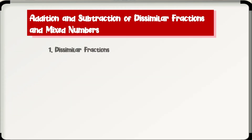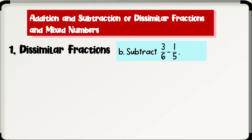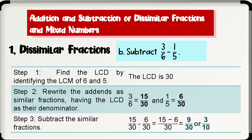Next example: subtract 3 over 6 minus 1 over 5. First, find the LCD by identifying the LCM of 6 and 5. Since the LCM of 6 and 5 is 30, we will use 30 as the LCD. Next, rewrite the addends as similar fractions: 3 over 6 is equivalent to 15 over 30, and 1 over 5 is equivalent to 6 over 30. Then subtract: 15 over 30 minus 6 over 30. Subtract the numerators — 15 minus 6 equals 9 — copy the denominator 30. Reducing to lowest term gives 3 over 10. Therefore, 3 over 6 minus 1 over 5 is equal to 3 over 10.